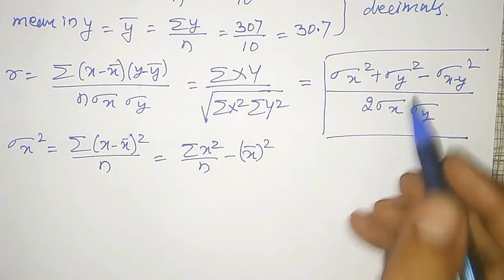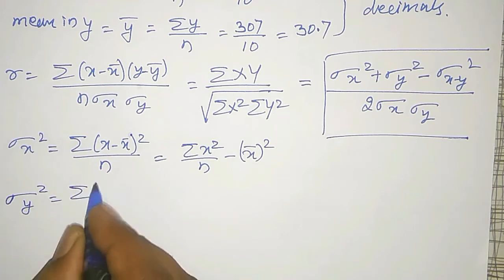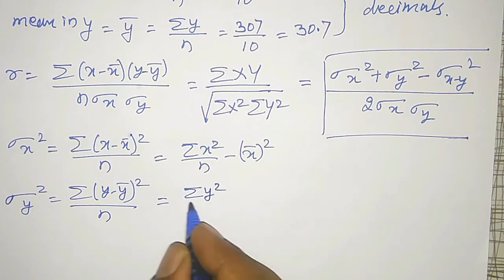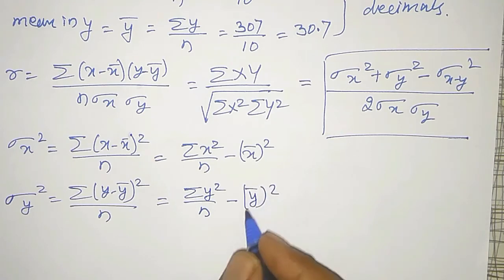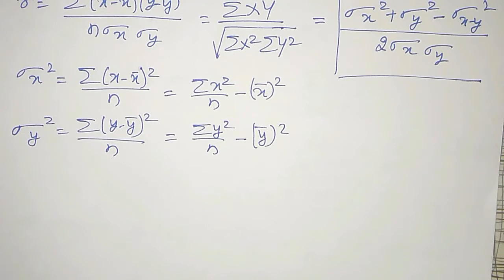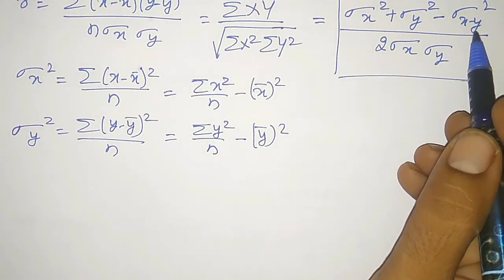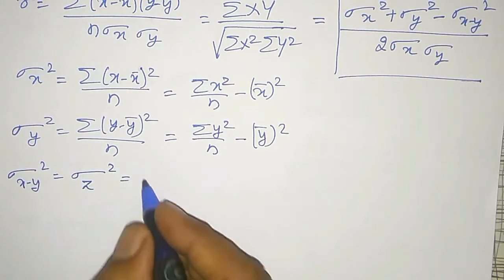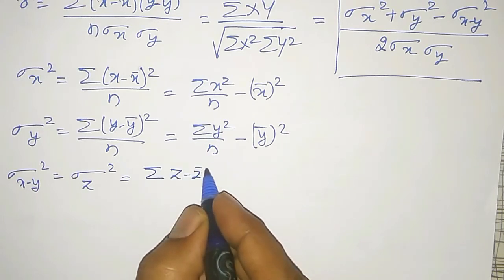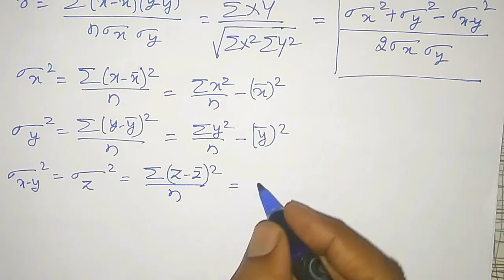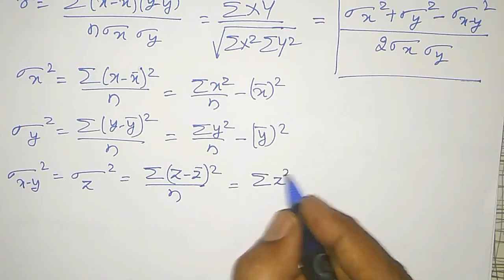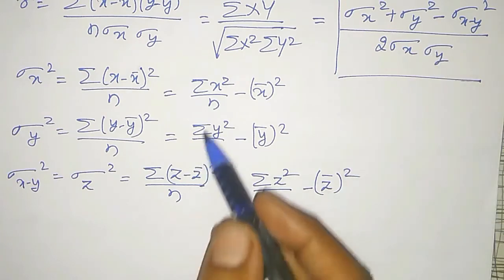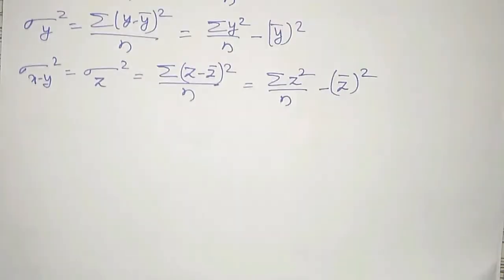Similarly, σy² equals summation of (y − y-bar)² divided by n, or summation of y² divided by n minus y-bar squared. And for σ(x−y)², I write z = x − y, so σz² equals summation of z² divided by n minus z-bar squared.